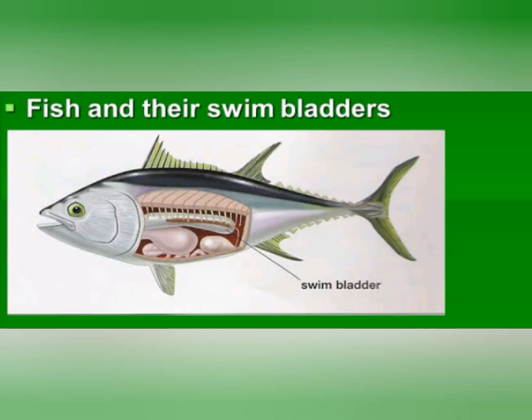The next application is the whale. Whales can sink or rise at will. Whales have a special organ in their body called the swim bladder. When a whale wants to rise up in water, it diffuses air from its tissues into the bladder, so its volume increases and its average density decreases, causing it to rise to the surface. To dive into the sea, they empty the bladder, which increases the average density of the whale so it sinks.